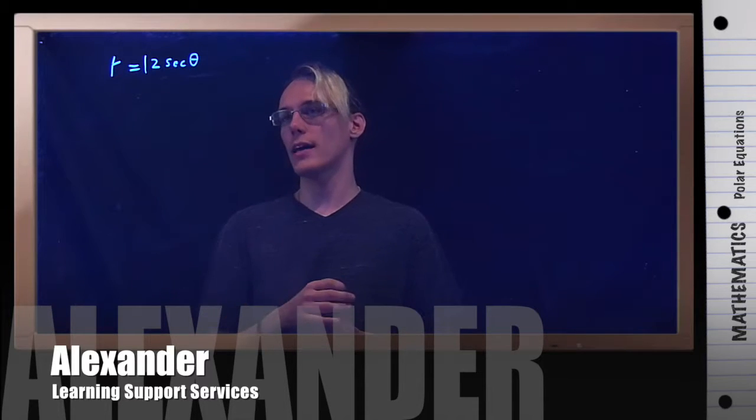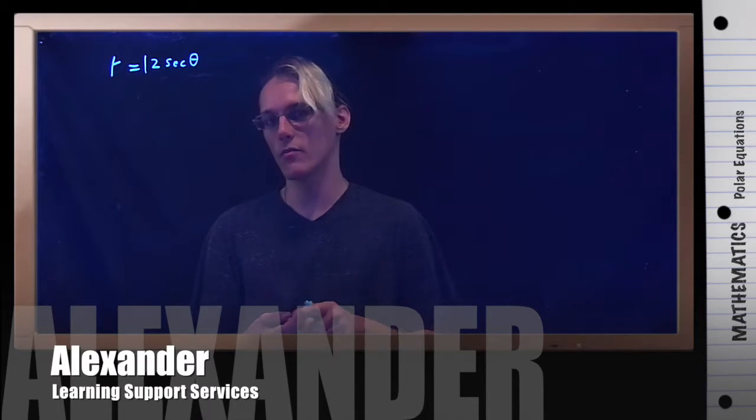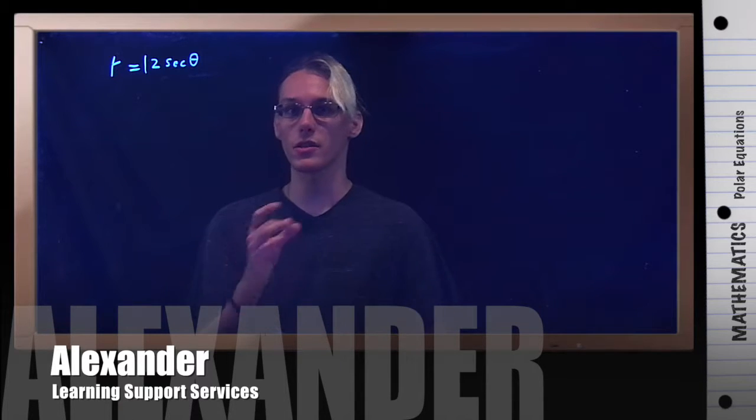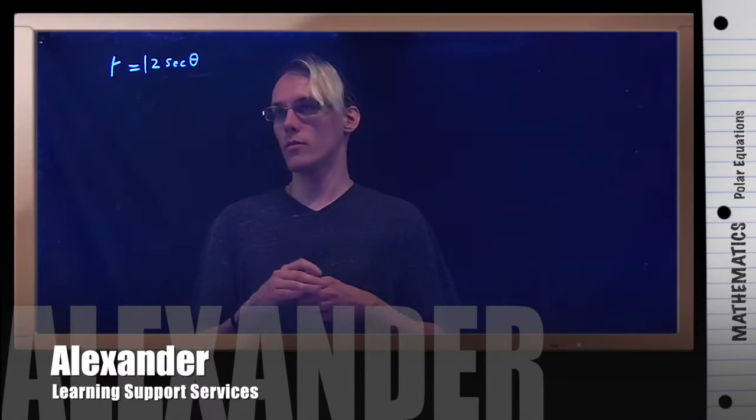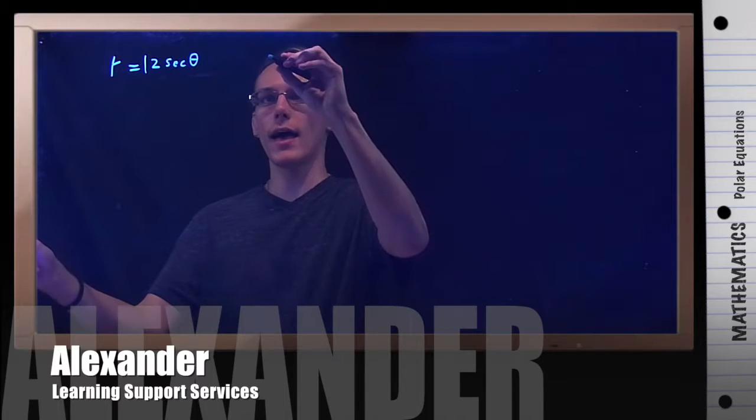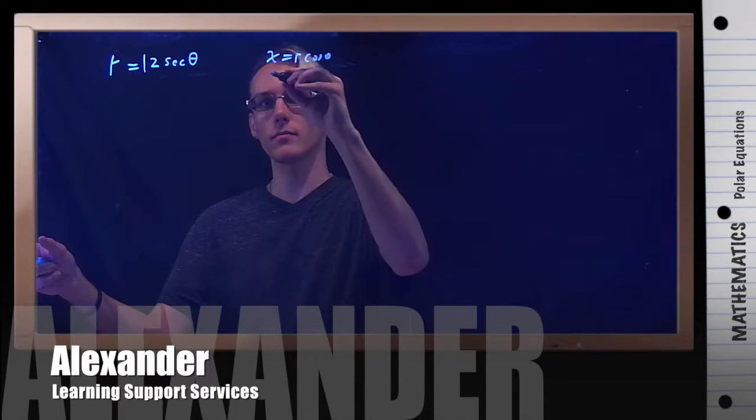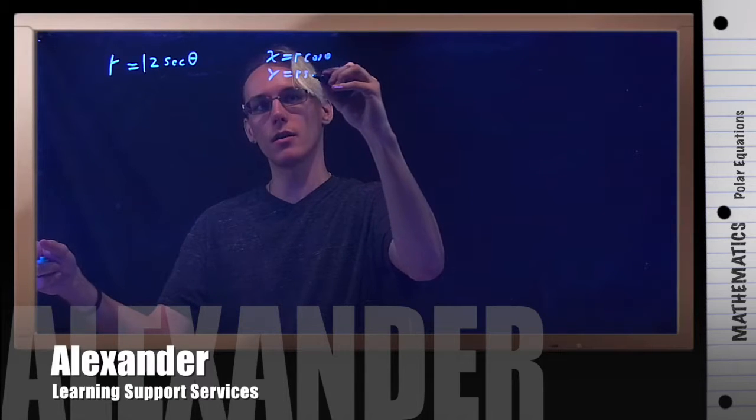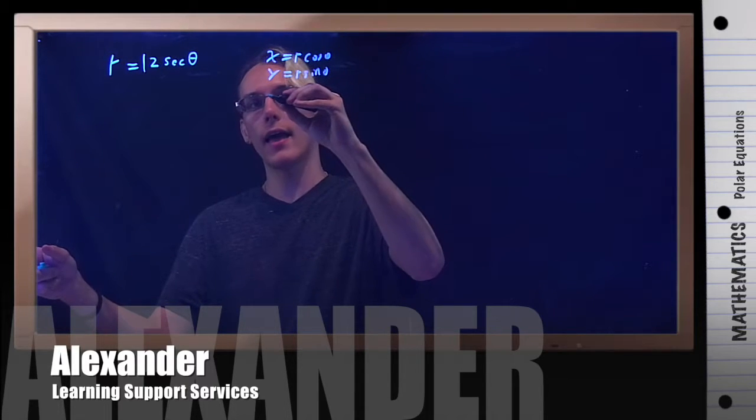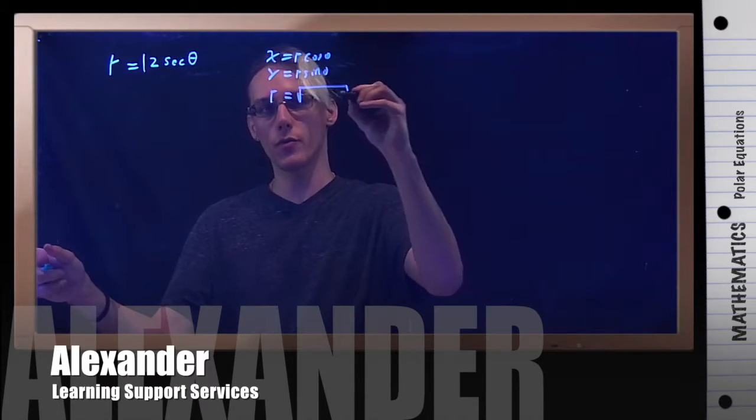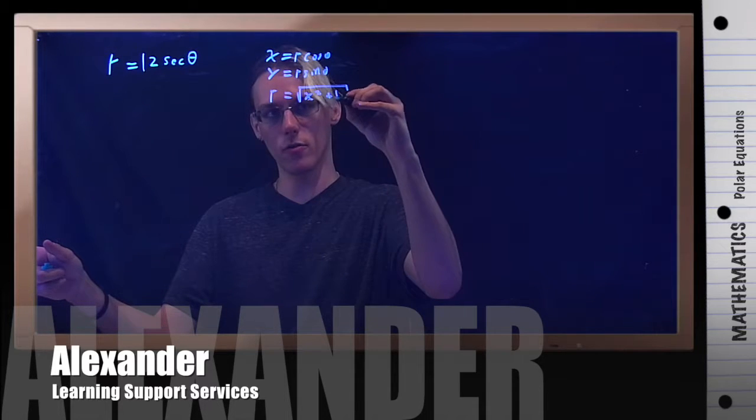In order to convert this back into a rectangular form, meaning it involves x's and y's instead of r's and theta's, what you need to remember is that x is equal to r cosine theta, y is equal to r sine theta, and r is equal to the square root of x squared plus y squared.